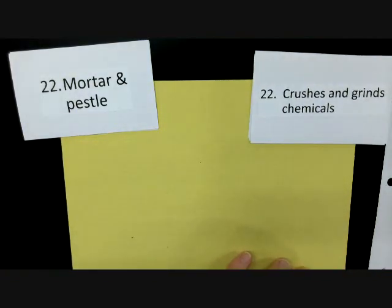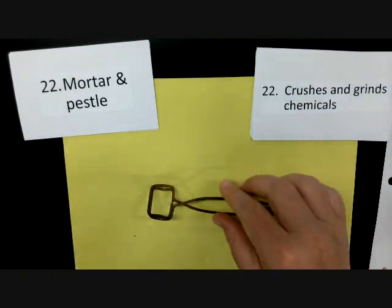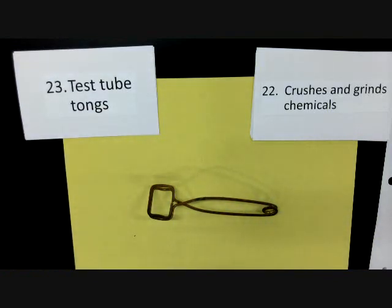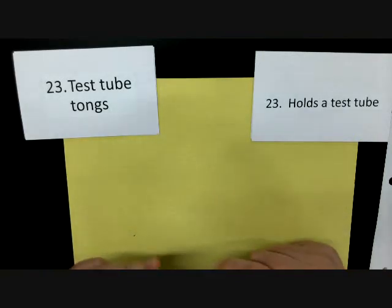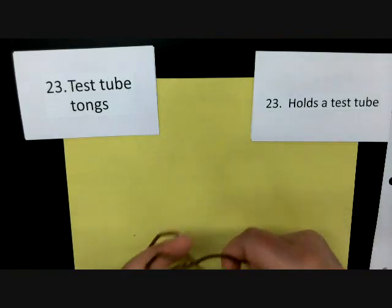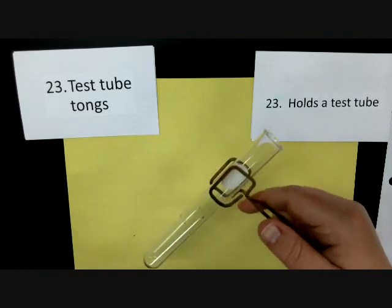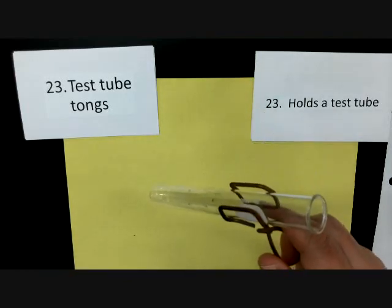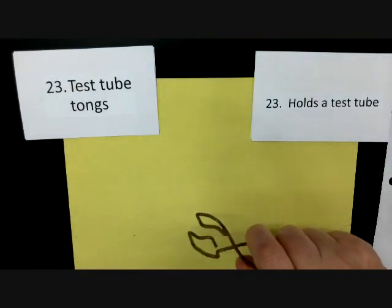The next one people get confused from far away — it looks similar to the striker but it's not. This is called test tube tongs. What do you think it does? It holds a test tube. When you squeeze, that's when it opens, and it fits the test tube perfectly. Sometimes during experiments the test tube might get very warm, so the test tube tongs are great for moving those test tubes around so you don't hurt your hands.